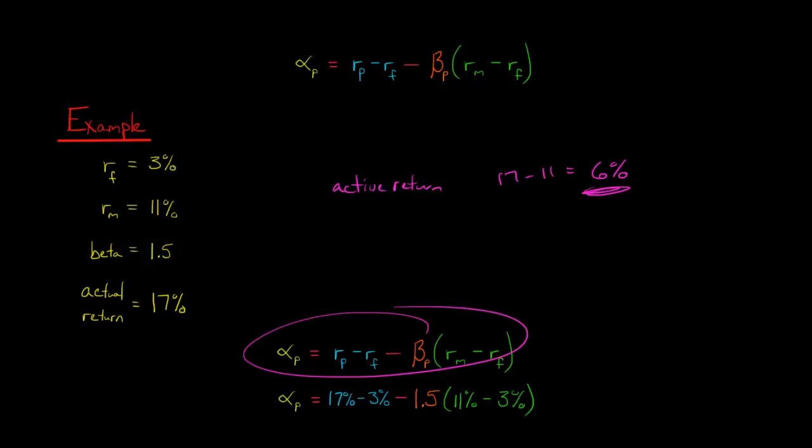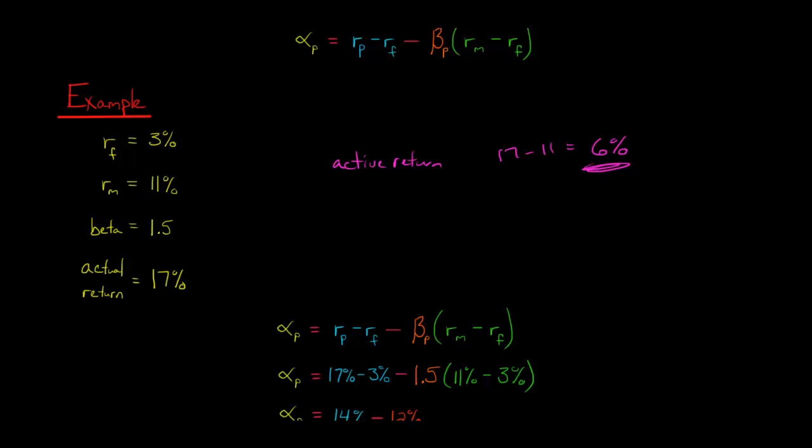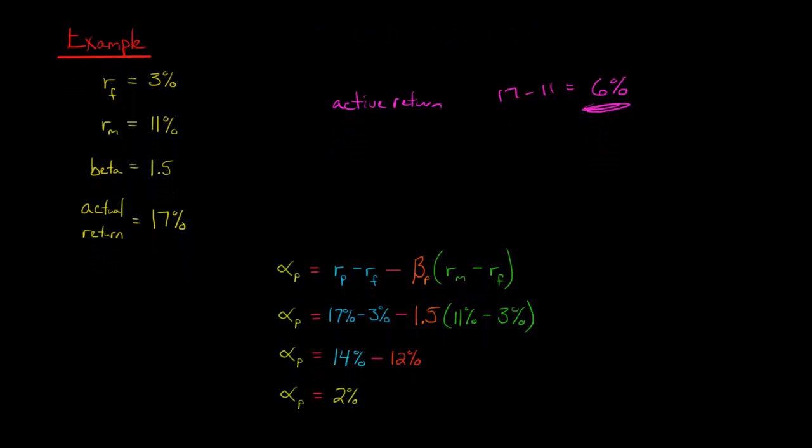So how do we do that? We take our formula here. We're going to solve for the alpha. We've got the return of the portfolio was 17%. The risk-free rate is 3%. And we plug in our beta, 1.5.